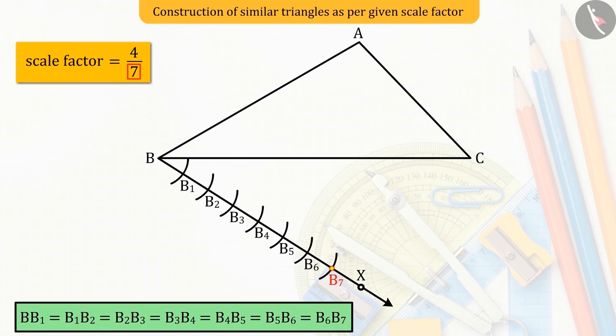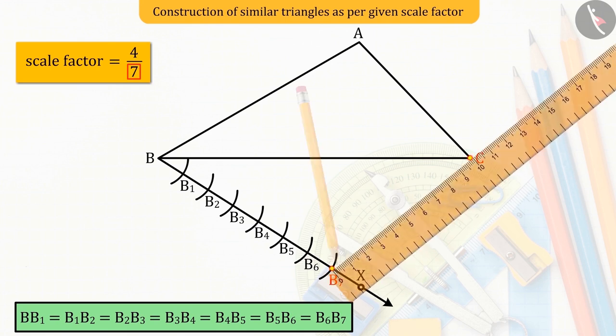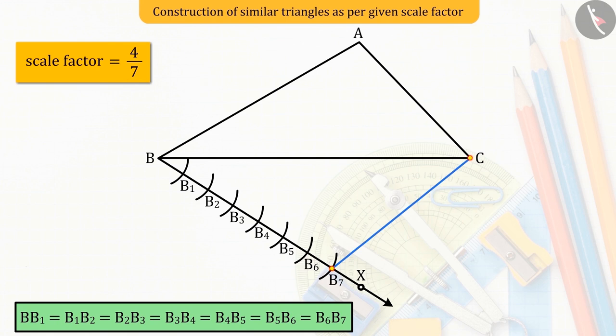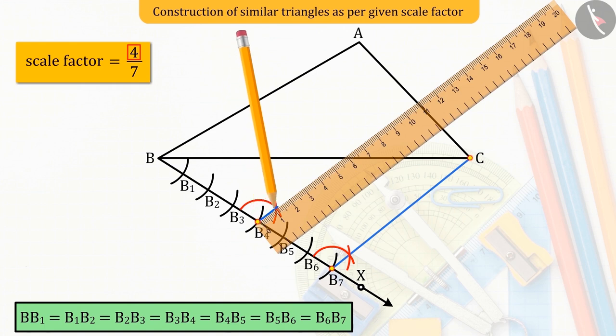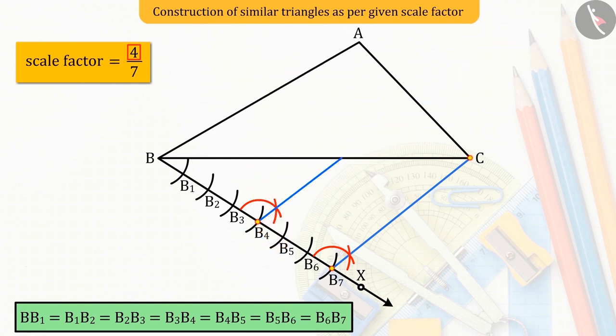After this, join the point B7 and point C. Now, we look at the smaller value of the scale factor, which is 4. So, from the point B4, we draw a line parallel to line CB7, which intersects the side BC of the triangle ABC on the point D.